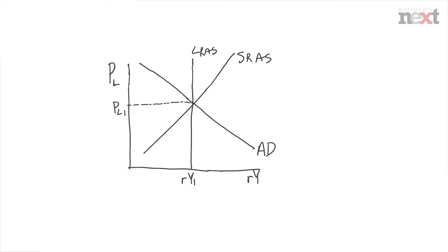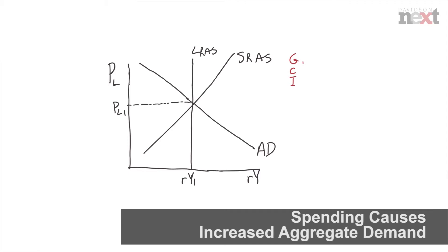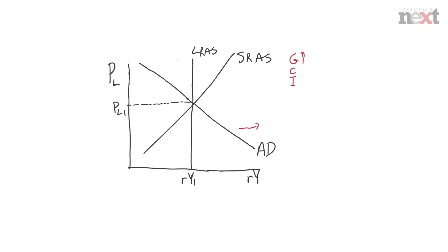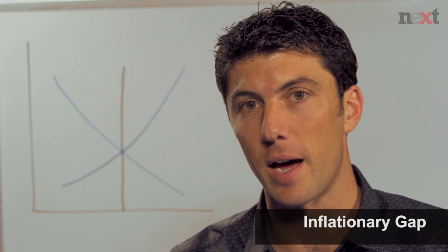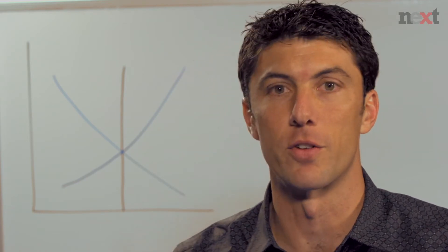As more people are brought on, we can show this using our aggregate demand and aggregate supply graph. The increased spending levels — either from the government, consumption, or business investment — leads to an increase in aggregate demand. As firms are trying to expand, they can do so at lower real wages from workers. This enables total output in the economy to increase past the full employment level, with pressure on prices to rise. This is the other side of the business cycle. The inflationary gap can be shown on our AD/AS model as the distance between the current level of real output and the capacity full employment level, RY1.